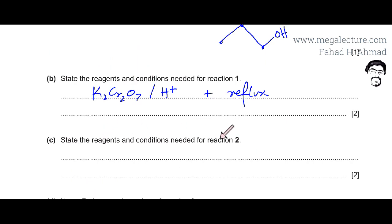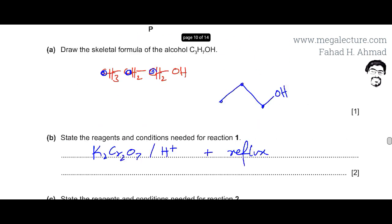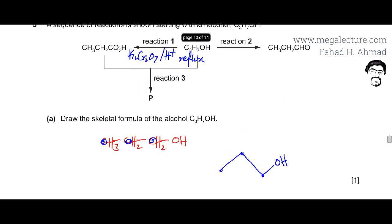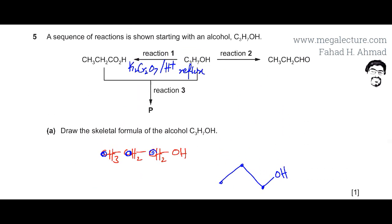Next is state the reagents and conditions needed for reaction 2. If you go back and have a look at reaction 2, it's the same reaction as reaction 1 except that the alcohol is not completely getting oxidized. It's getting oxidized to an aldehyde, but the reaction has stopped at an aldehyde. The conditions are going to be exactly the same. You're oxidizing an alcohol but you're preventing the complete oxidation.